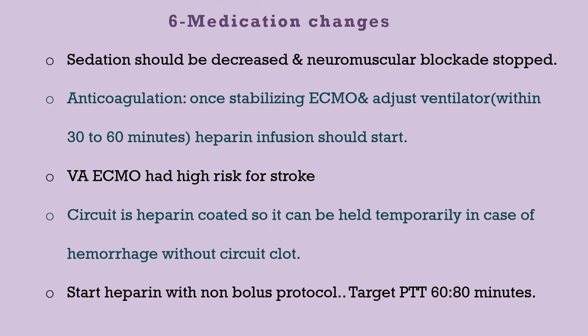The last step to initiate ECMO is medication change. Sedation should be decreased and neuromuscular blockade should be stopped after everything is stabilized. For anticoagulation, once ECMO is stable and the ventilator is adjusted — within 30 to 60 minutes — heparin infusion should be started. VA ECMO has a high risk for stroke. The circuit is heparin-coated, so anticoagulation can be held temporarily in case of hemorrhage without risk of clot inside the circuit. Start heparin with a no-bolus protocol targeting PTT 60 to 80 minutes.